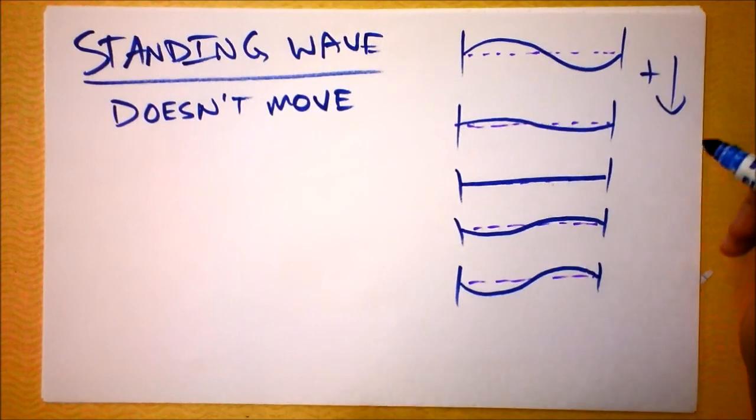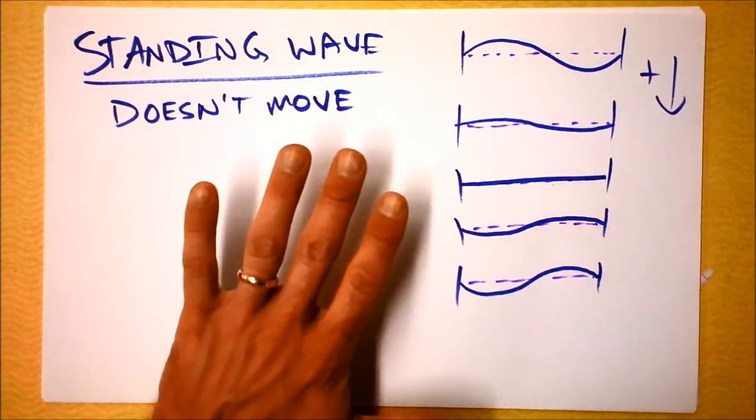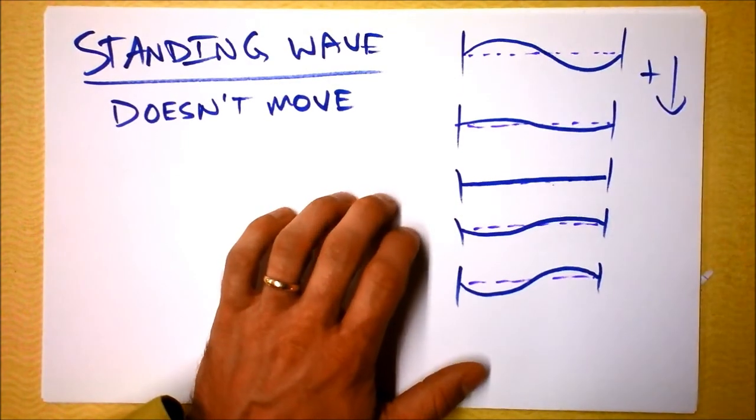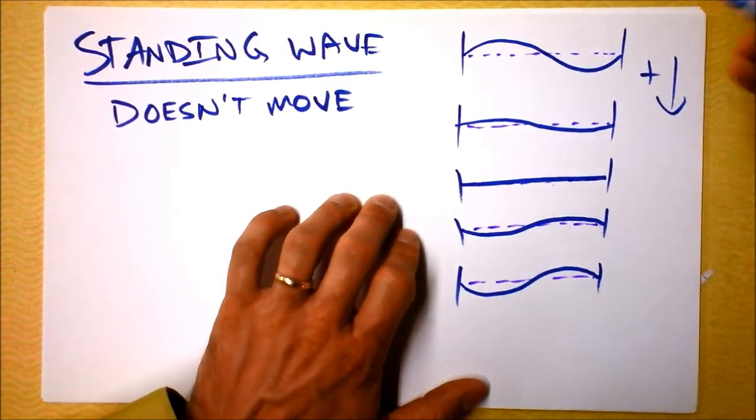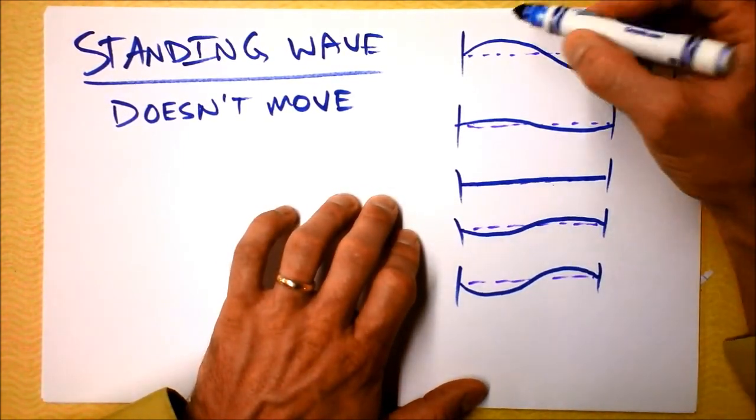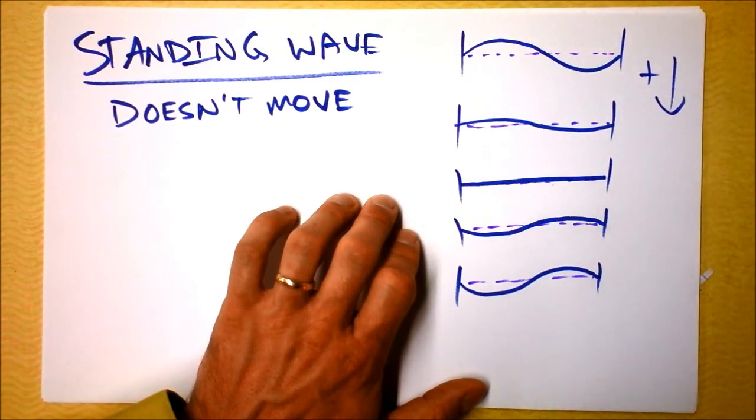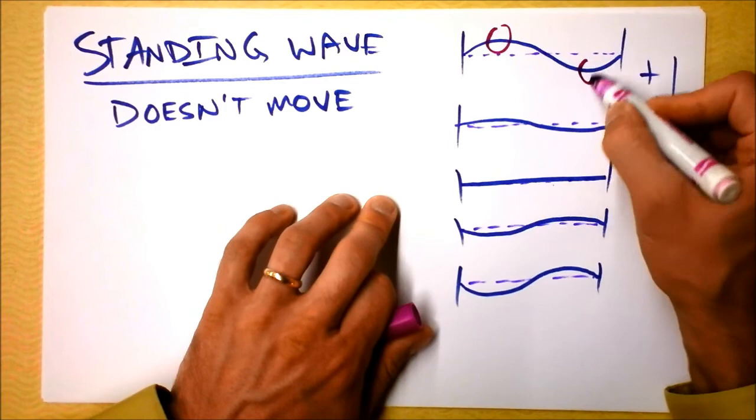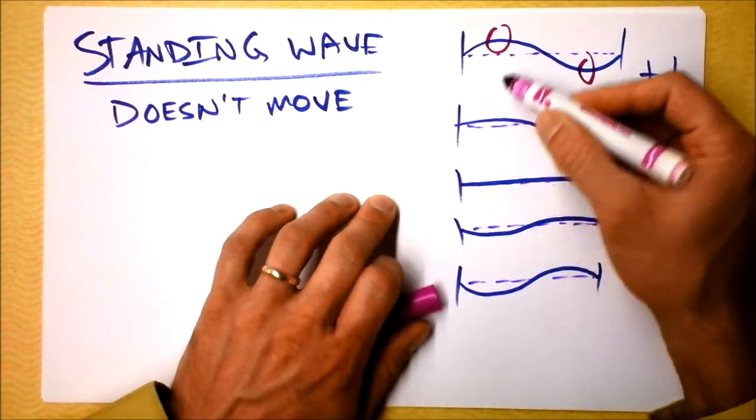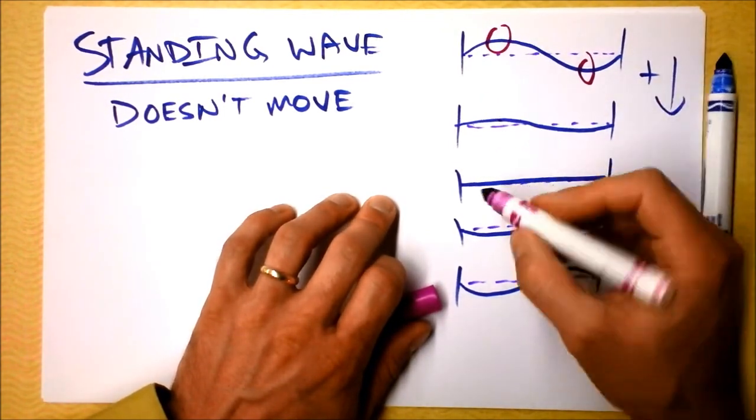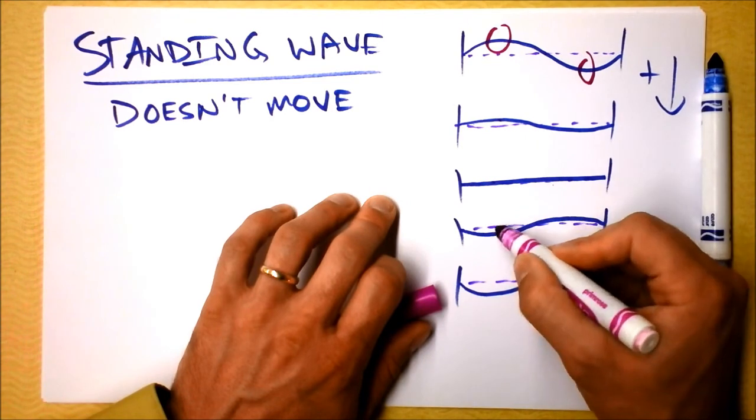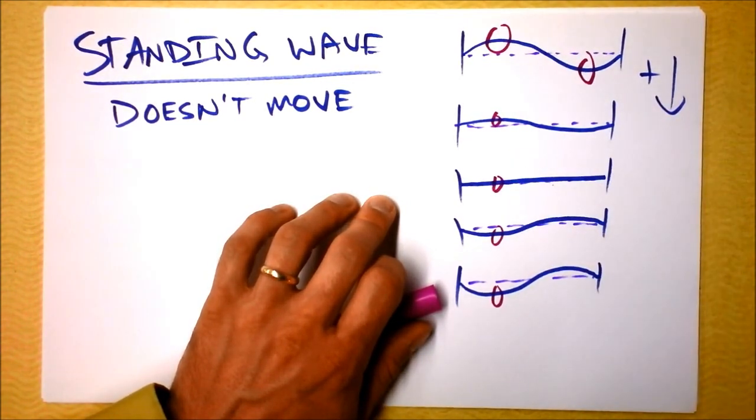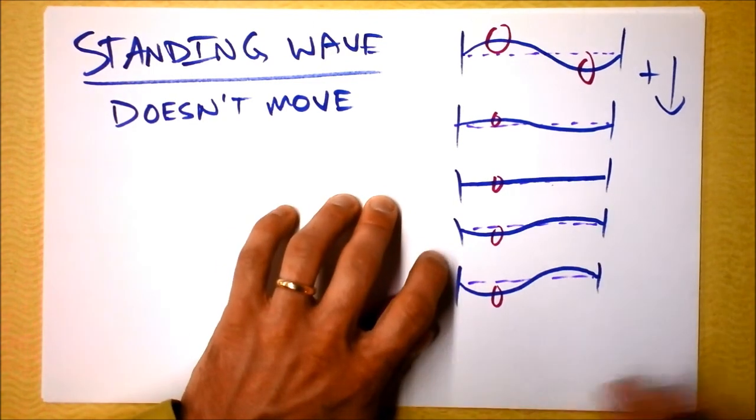So if you consider the points on this wave, this is a rope, what I've drawn right here, but it goes for everything that has a standing wave on it. This section of wave right here, this section of rope, is moving a lot. And this section of rope is moving a lot. Because it's up, then it's small, then it's zero, then it's negative, and then it's really negative.